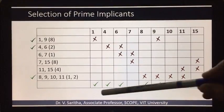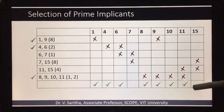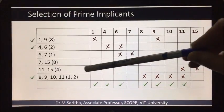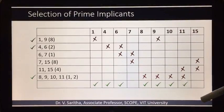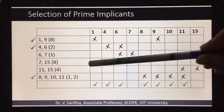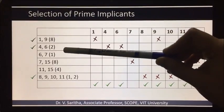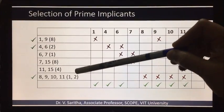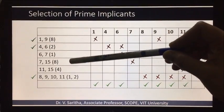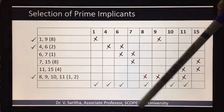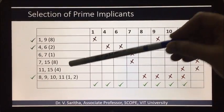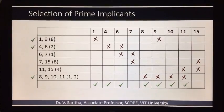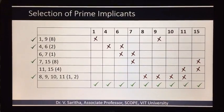Now if you observe, at the end seven and fifteen are not checked. And to include these two terms also into our answer, we have to select from the remaining prime implicants one of them or more, whatever the required number, as essential prime implicants. So here in this case I am taking seven and fifteen to include seven and fifteen into my answer.